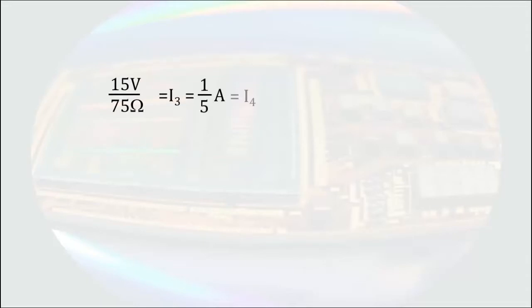which from our previous equations is also equal to I4. Remembering that I2 is equal to 4 times I3 gives us that I2 is 4 fifths of an amp. Remembering that I1 is equal to I2 plus I3 gives us I1 is 5 fifths of an amp, which also is equal to IS.